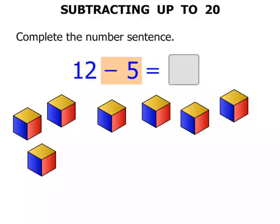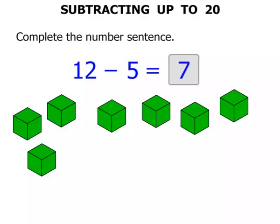Okay, 5 have disappeared. So what are we left with? 1, 2, 3, 4, 5, 6, 7. Our answer equals 7.